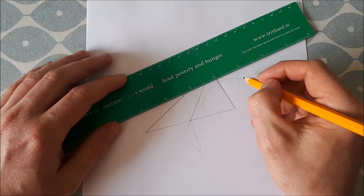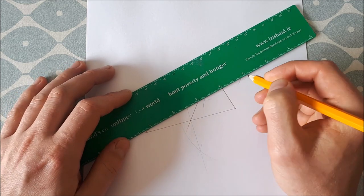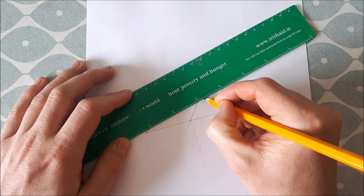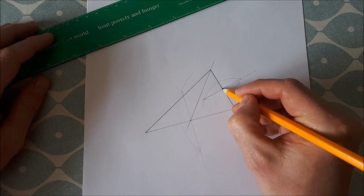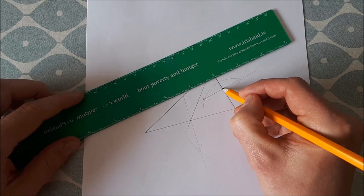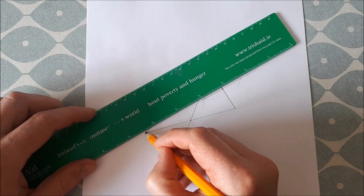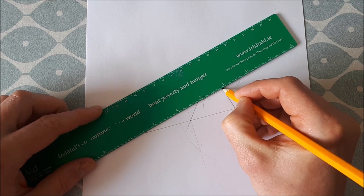You join those two points of intersection, and then that gives you your bisector. You join your bisector to the opposite vertex.